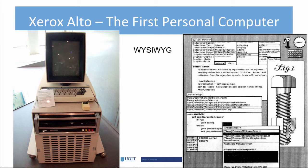Prior to the Alto, users had to insert code tags for layout and text. For example, codes were used to indent, set margins, and create bold and italicized font.